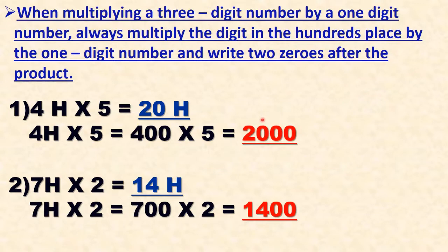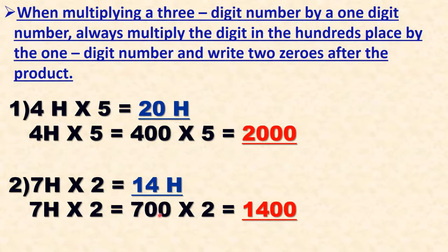Second example: 7H multiplied by 2. We multiply 7 by 2 to get 14, then place the H next to 14, giving 14H. In expanded form, 7H means 700 multiplied by 2. Multiply 7 by 2 to get 14, then place the two zeros from 700 next to the product 14, so the answer is 1400.